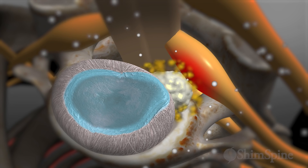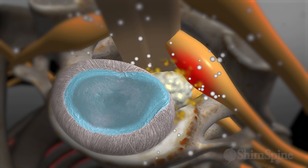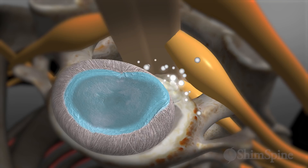Luckily, most disc herniations get better. Usually the body reacts to this acid spill by sending special types of cells to remove or mop up the acid. That is why the initial herniation causes such significant pain, but over time the chemical spill is cleaned up and the pain lessens. The body also sees the disc herniation as damaged tissue and other cells also work to remove this disc material. Over time, most disc herniations lessen in size and no longer cause pain, weakness, and numbness.